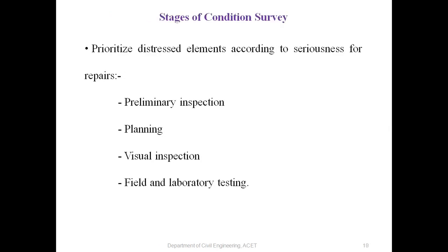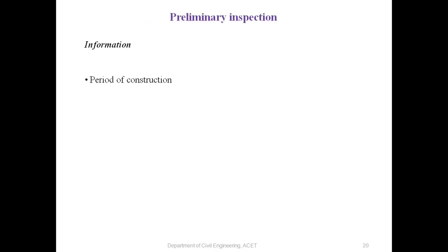Stages of condition survey: prioritize distressed elements according to the seriousness for repairs. First is preliminary inspection; second is planning; third is visual inspection; fourth is field and laboratory testing. For preliminary inspection, we need to recover the period of construction, how much life has been achieved and how much is left, then construction details including architectural and structural drawings.